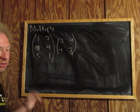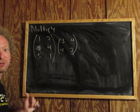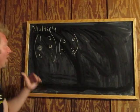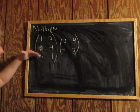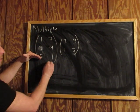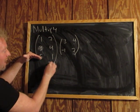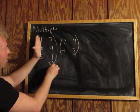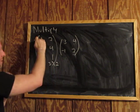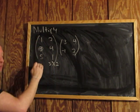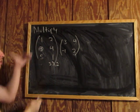So this matrix has dimension 3 by 2. It's rows: 1, 2, 3 rows by 2 columns. So this is a 3 by 2 matrix — the number of rows by the number of columns.